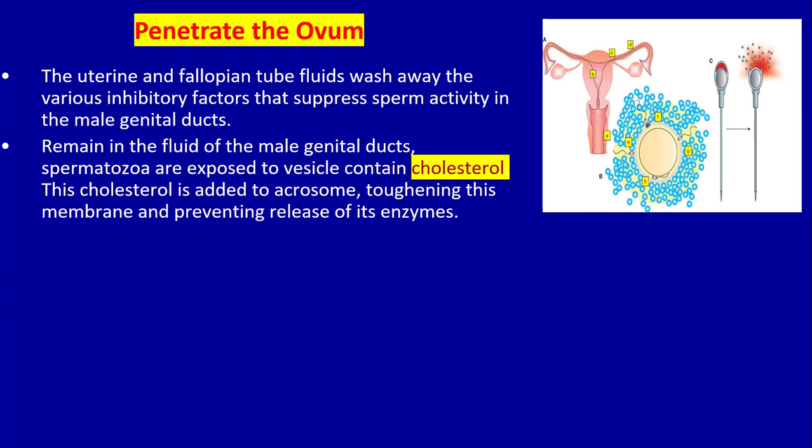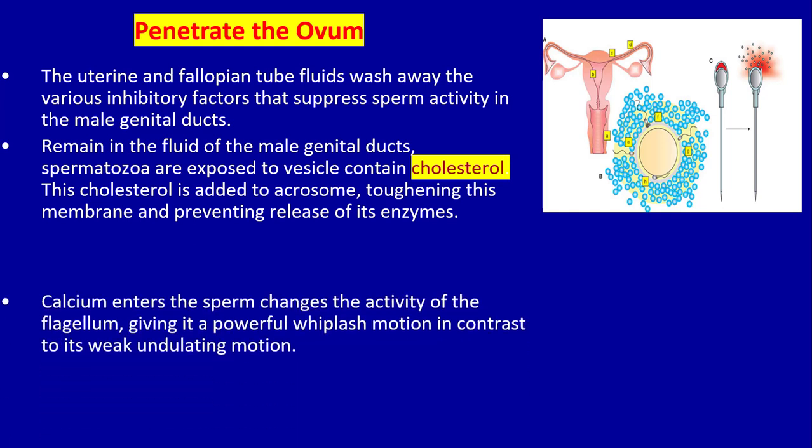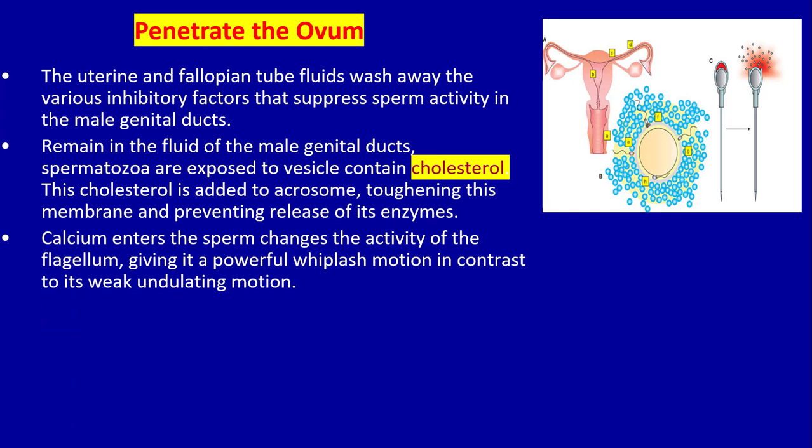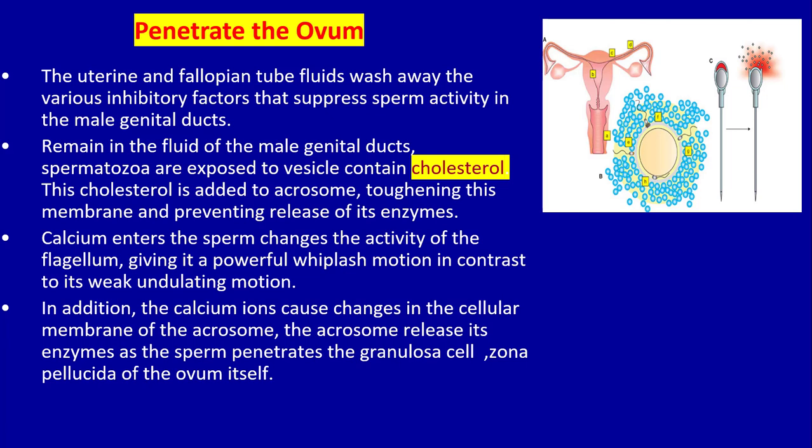The uterine and fallopian tube fluid wash away the various inhibitory factors that suppress sperm activity in the male genital duct. While remaining in male genital duct fluid, spermatozoa are exposed to vesicles containing cholesterol, which is added to the acrosome, toughening its membrane and preventing release of its enzymes. Calcium then enters the sperm, changing the activity of the flagellum and giving it a powerful whiplike movement, in contrast to its weak and undulating motions previously.